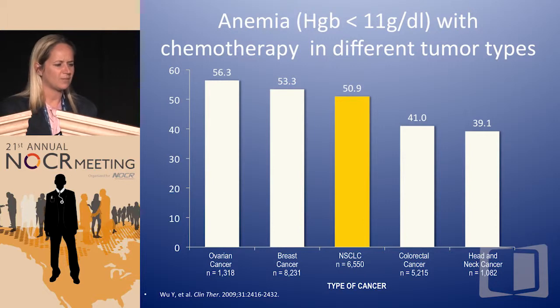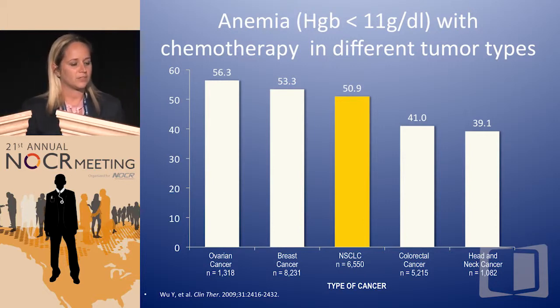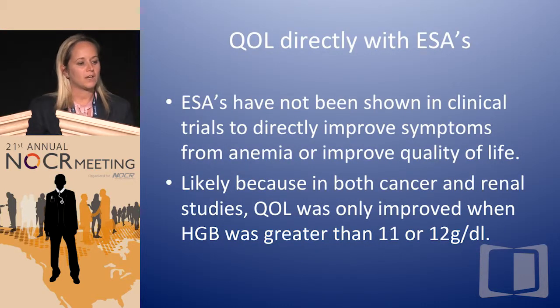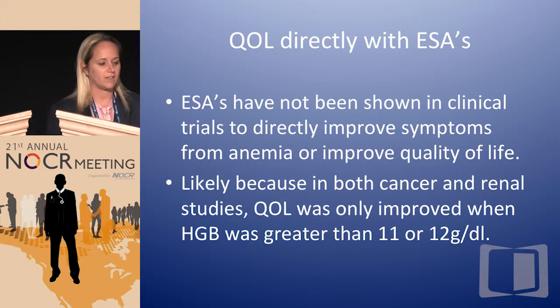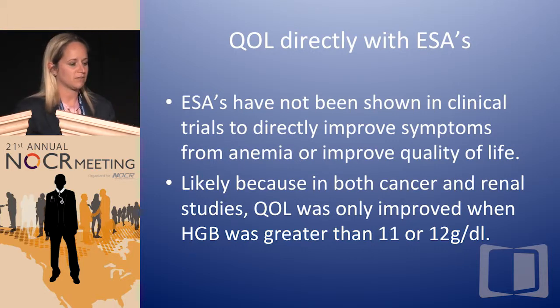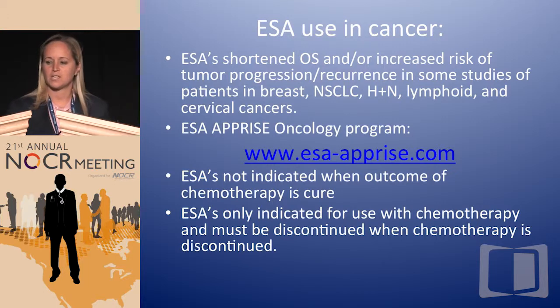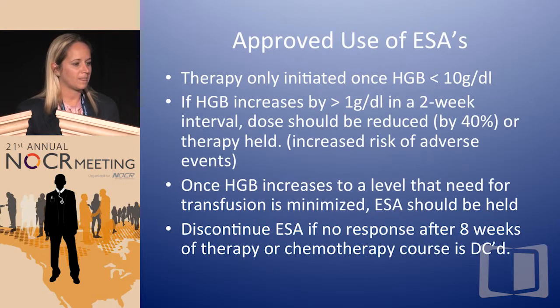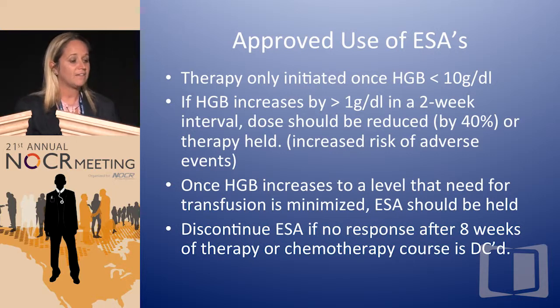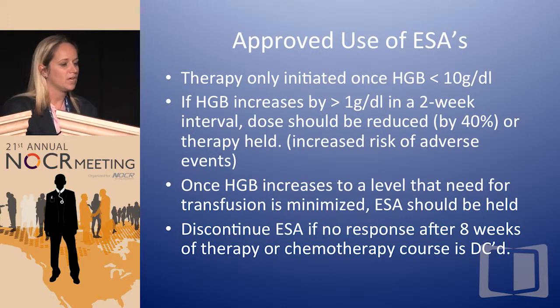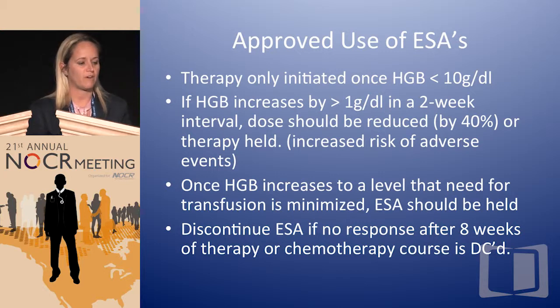Shifting to anemia — across many solid tumors, anemia is a significant risk factor when giving chemotherapy. Quality of life is not directly associated with ESAs, so if we're going to give them to a patient, we cannot claim they improve quality of life. You are only trying to reduce their risk for a blood transfusion. You have to be enrolled in the APPRISE program. ESAs are only approved for hemoglobin less than 10, and if hemoglobin rises more than one gram per deciliter in a two-week interval, you should reduce or hold the dose.